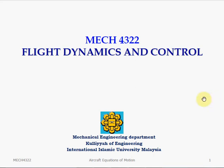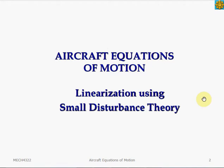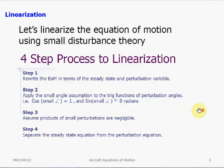At this point, we have derived a full-blown six-degree-of-freedom nonlinear equation of motion. Now we are going to linearize the equation using small disturbance theory. In small disturbance theory, we assume that the motion consists of a steady flight condition plus a perturbed condition, which is a small deviation from the steady state condition.